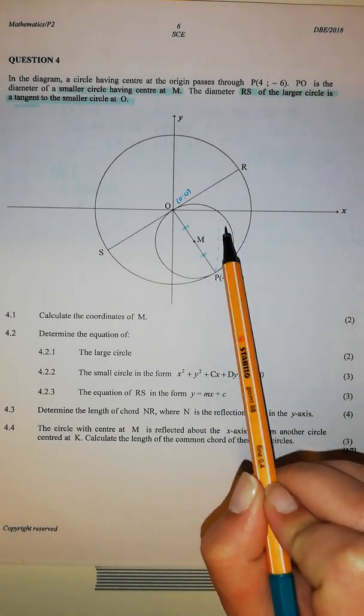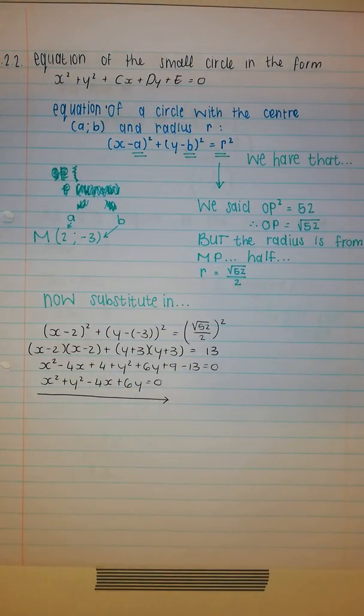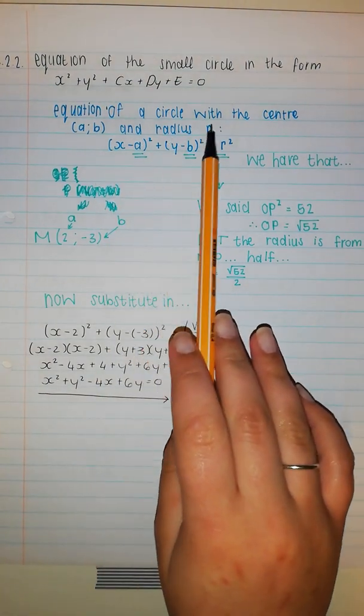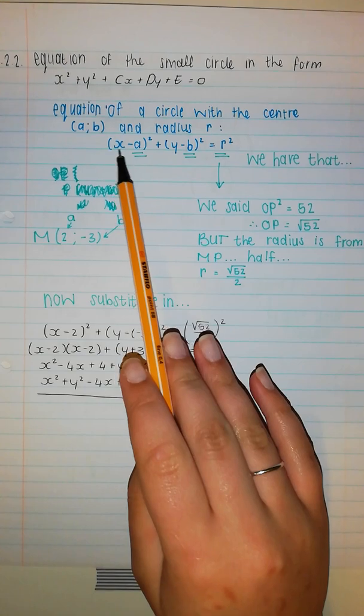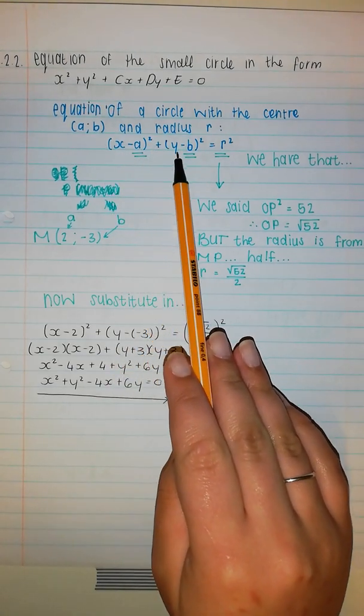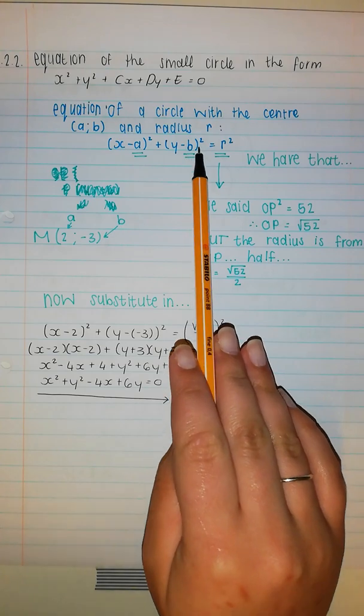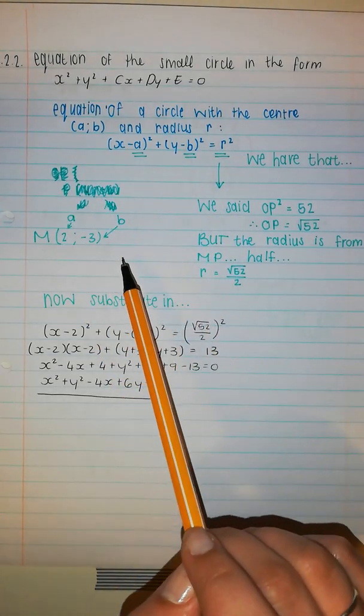So you need to know the formula of the other one. That formula is not on your information sheet, so you've got to know it. The equation of a circle with center (a,b) and radius r is (x - a) squared plus (y - b) squared equals r squared. I scribbled out because I didn't want to write everything again.